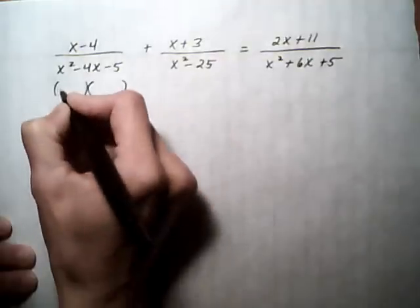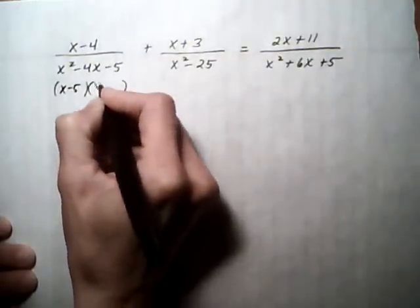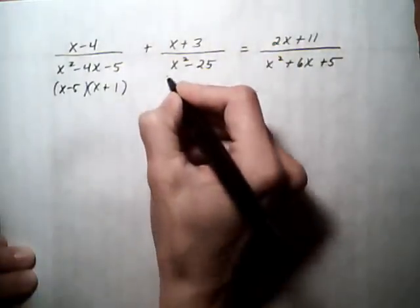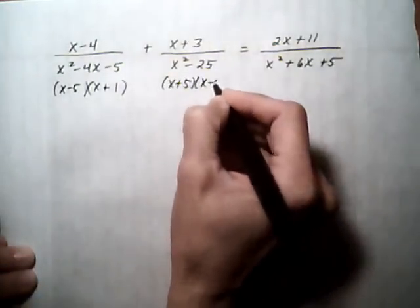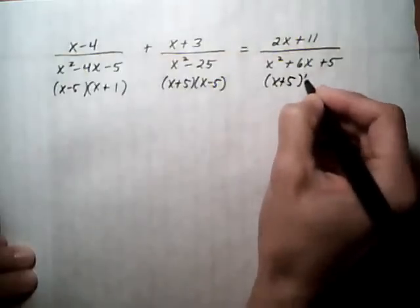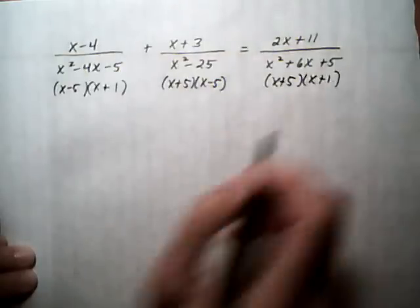So this first one factors into x minus 5, x plus 1. The next one factors into x plus 5, x minus 5. And the last one, x plus 5, x plus 1.